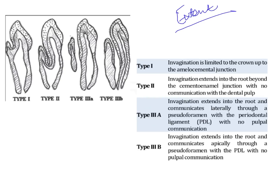Type 1 is limited to the crown up to the CEJ. Type 2 is into the root beyond the CEJ with no communication to the dental pulp — meaning you have an invagination, however the entire dental pulp remains normal on its own.